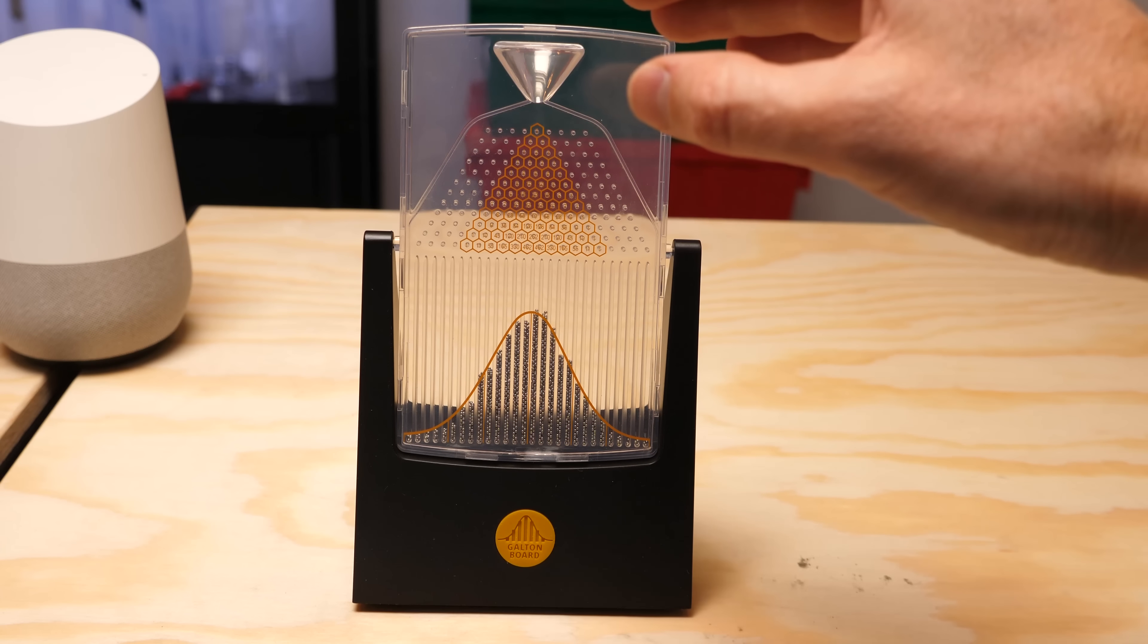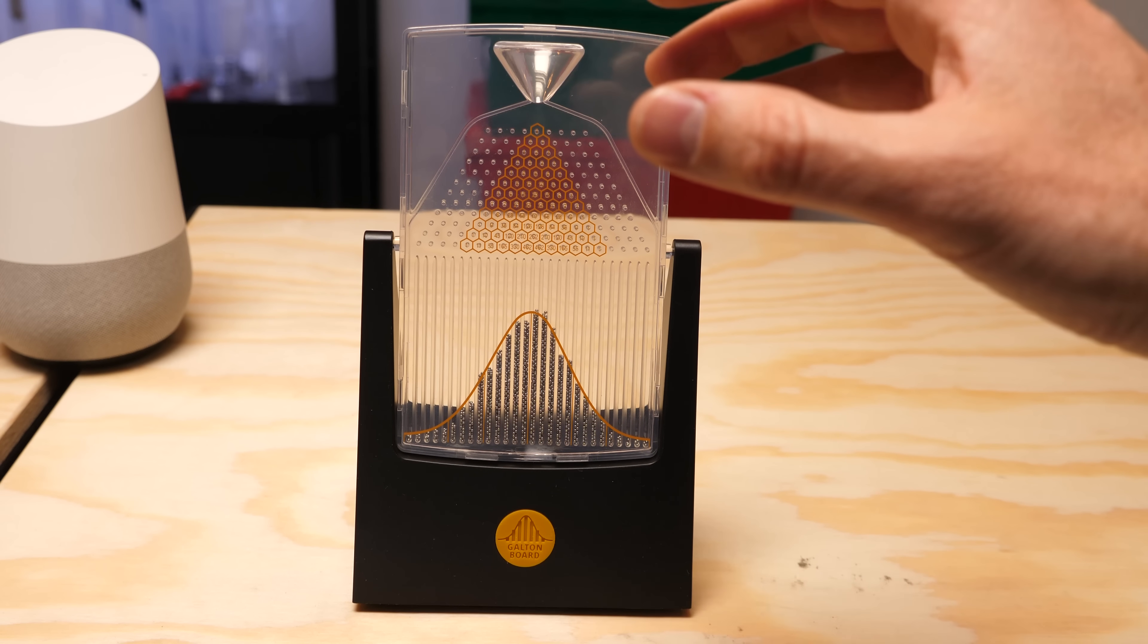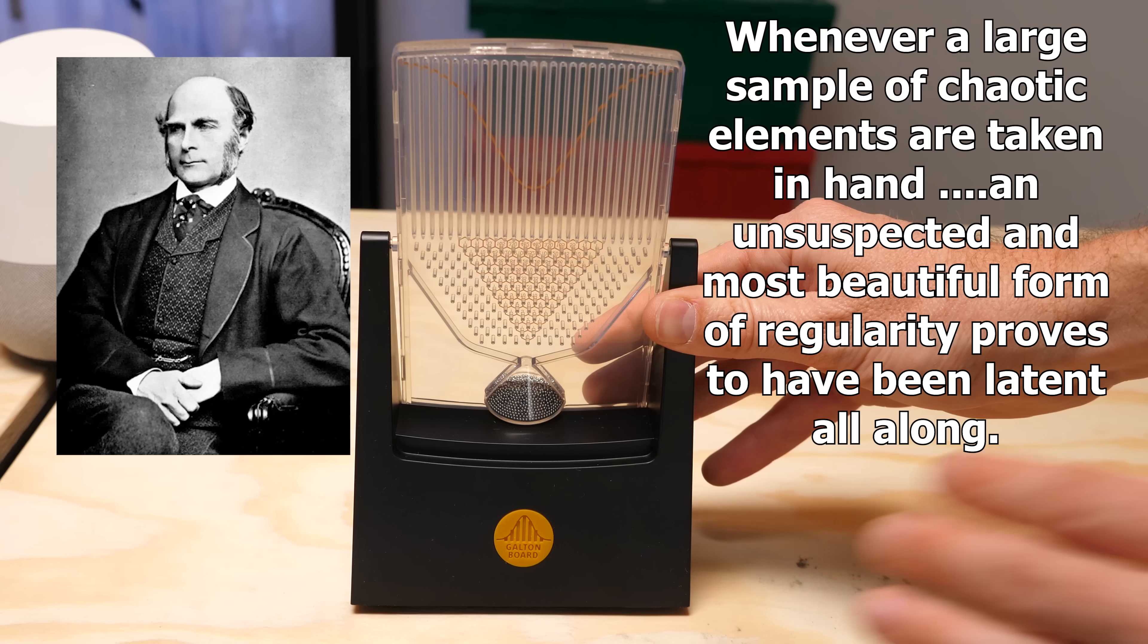And what's interesting about this is there's no specific thing telling the balls to fall in this order. But when you get a bunch of chaotic motions all working together, they end up producing a very predictable curve. In fact,